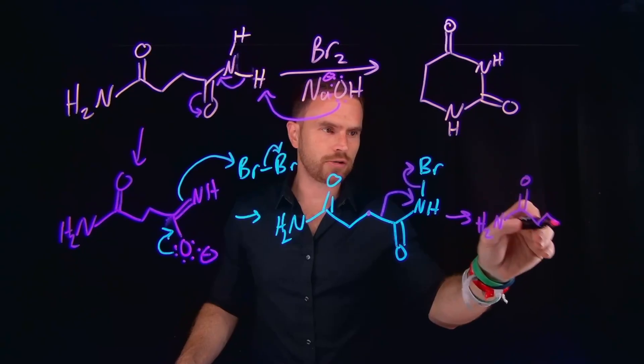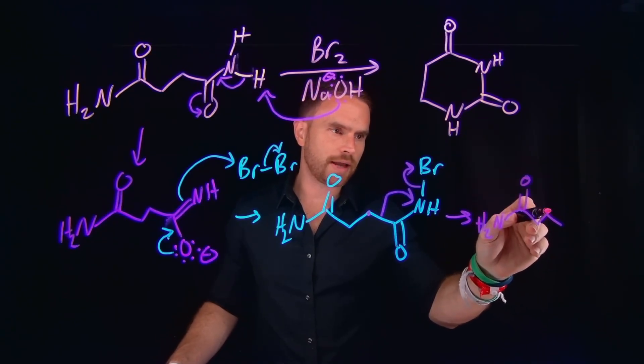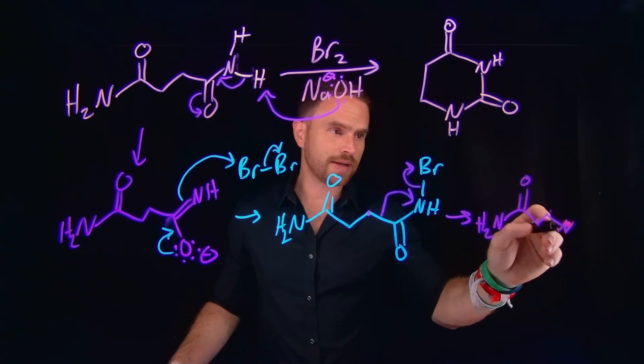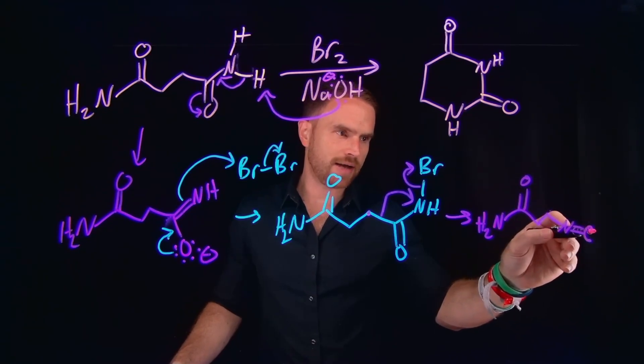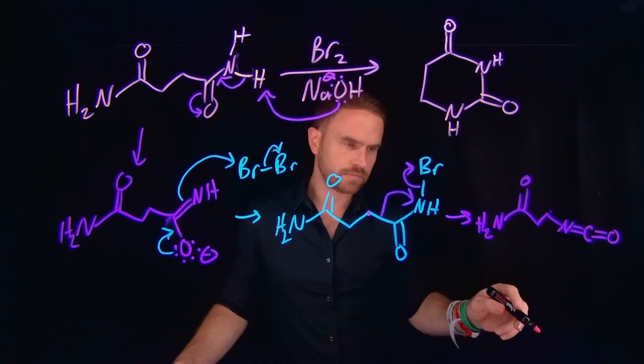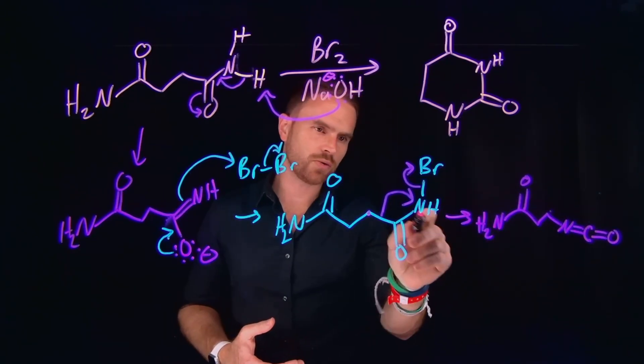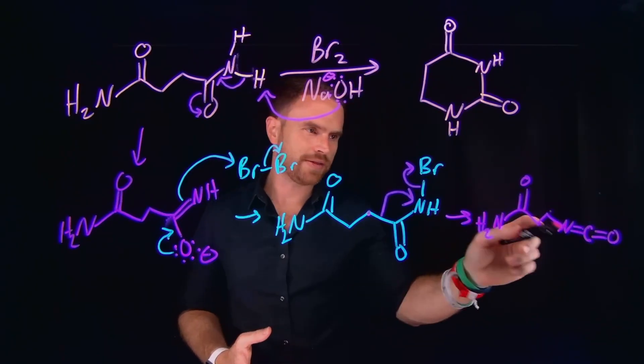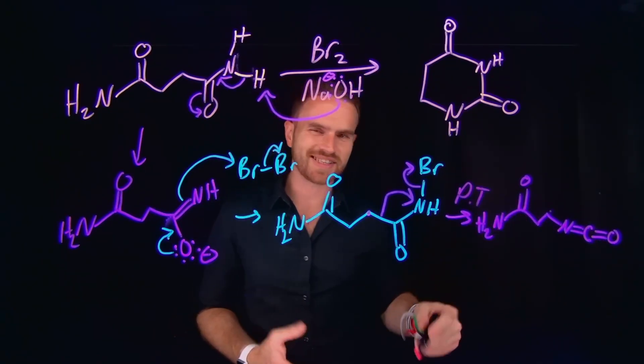So the product of this reaction forms an isocyanate. And you'll see what that structure looks like when I draw it in. But basically, you have a carbon to nitrogen bond, a nitrogen to carbon double bond, and then a carbon to oxygen double bond. And of course, this means it must have also undergone a proton transfer, because notice we've also included our NH group here, and that's no longer the case. So in addition to a proton transfer, you end up generating this isocyanate.